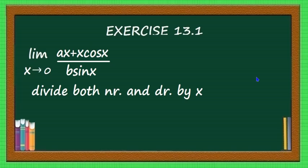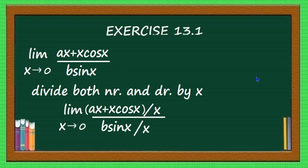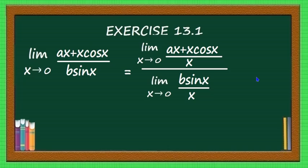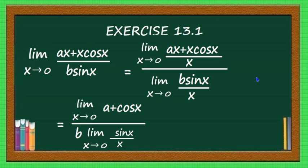Dividing numerator and denominator by x, the problem reduces to: limit x tending to 0 of (ax + x·cos x)/x divided by (b·sin x)/x. Applying the quotient of limits rule, this equals limit x→0 of (ax + x·cos x)/x divided by limit x→0 of b·sin(x)/x. In the numerator, ax/x = a and x·cos(x)/x = cos(x), giving a + cos(x).